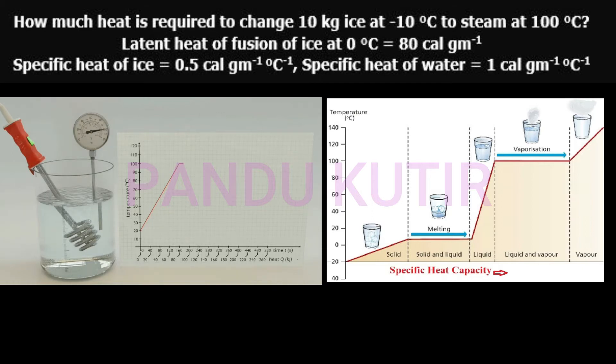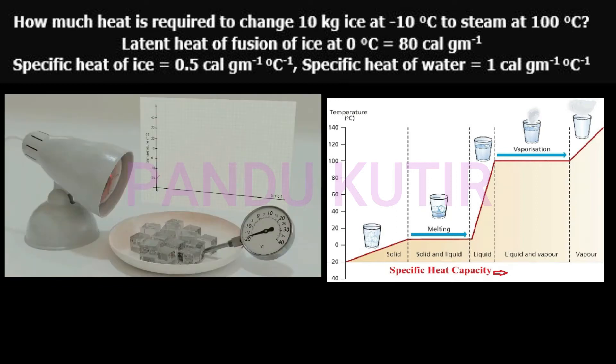The graph has temperature on one axis and heat on the other axis. The temperature range shown is from minus 40 to 140 degrees centigrade.